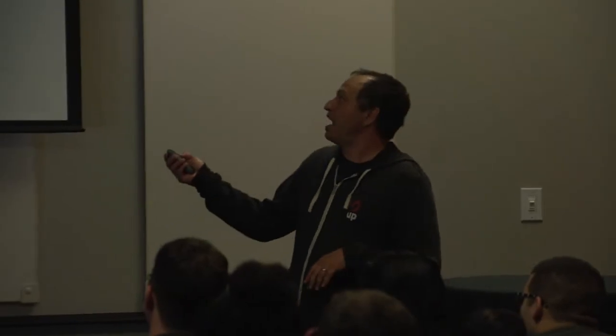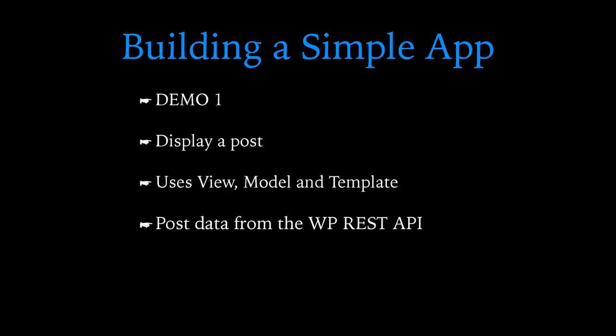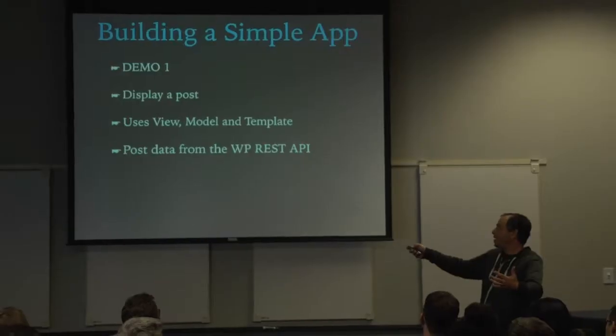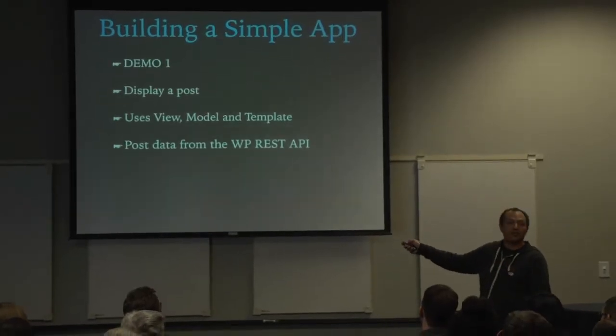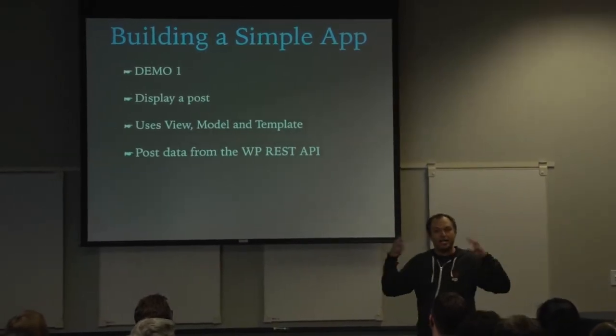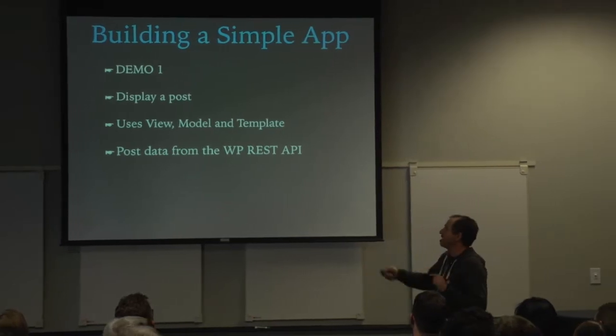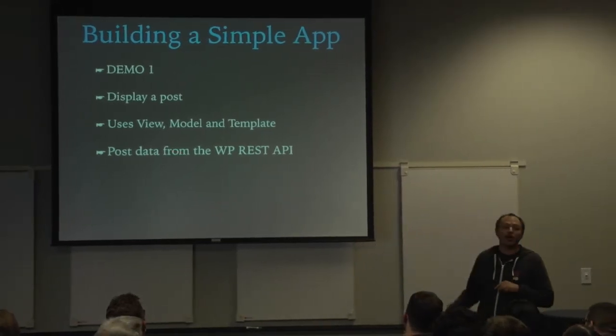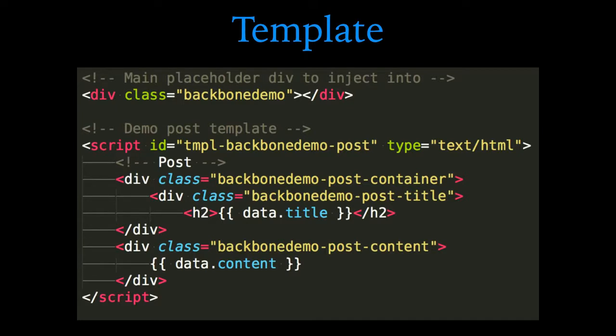This is a very simple demo. We're just going to display a single post — the first sample post that comes with any WordPress install. We're going to use a view, a model, and a template. The view will represent the display on the DOM, the model will represent the data of the post, and the template will be the actual HTML where that data gets inserted. We're going to get the post data from the REST API, and I've installed the REST API on my site.